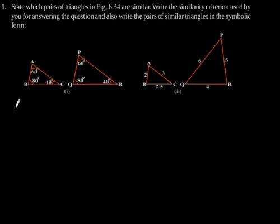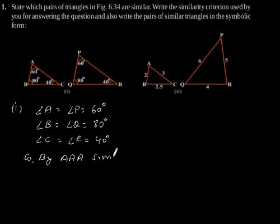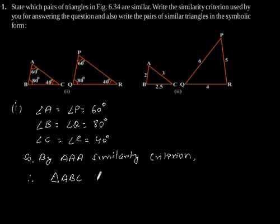Considering the first figure, we can get angle A equals angle P equals 60 degrees, angle B equals angle Q equals 80 degrees, and angle C equals angle R equals 40 degrees. So by AAA similarity criterion, triangle ABC is similar to triangle PQR.